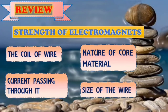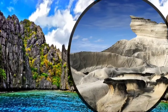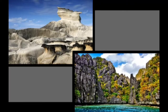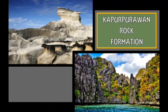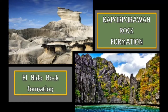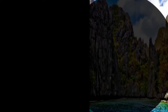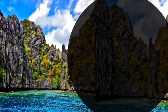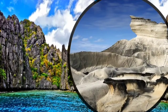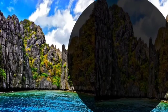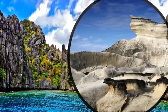Look at these pictures. Aren't they nice to look at? What can you say about them? What's the first thing that came into your mind when you saw them? Have you seen similar things like this in your own provinces or in one of your travels in the country? In the first picture, this is the Kapurpurawan rock formation found in Ilocos. And the second picture is El Nido rock formation found in Palawan. Did you ever wonder what forces carved out these magnificent structures? Or what changes might have caused these structures to form? What physical and chemical changes have occurred in such formations?